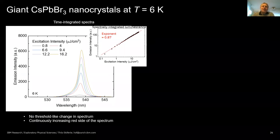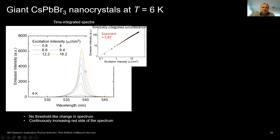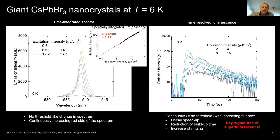Cooling these nanocrystals to 6 K and looking at the spectrum shows emission near 440 nm for this compound, where bulk is expected to emit. With increasing intensity in a log-log plot, the power-law exponent is 0.87 — even slight quenching, no threshold. However, in the time domain the same things happen: a speedup and oscillations corresponding to superfluorescence. So even in this more continuous bulk-like system, we see the key signatures of superfluorescence.